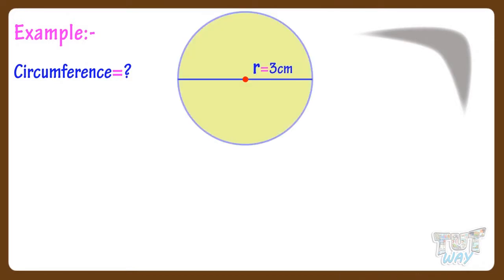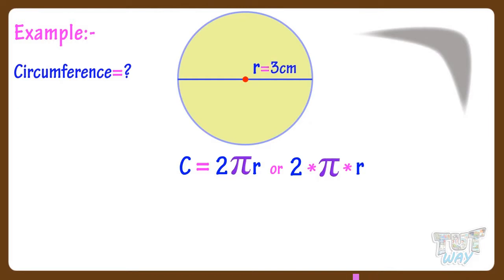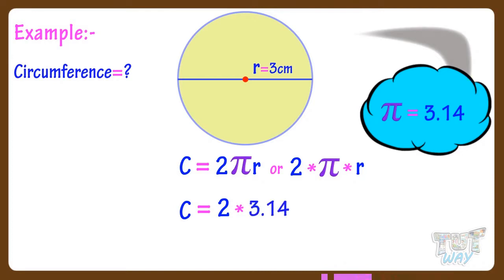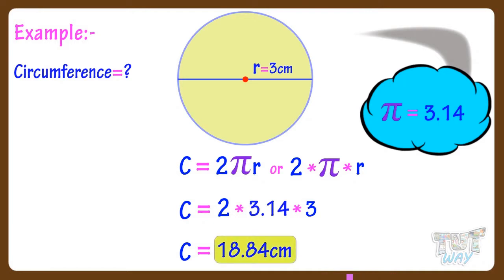Now let's find out the circumference of this circle. We know circumference equals 2πr, that is 2 multiplied by π multiplied by r. We have radius equals 3 centimeters in this circle, and π is always equal to 3.14. So here we have circumference equal to 2 × 3.14 × 3, which gives us 18.84 centimeters. So the circumference of this circle with radius 3 centimeters is 18.84 centimeters.